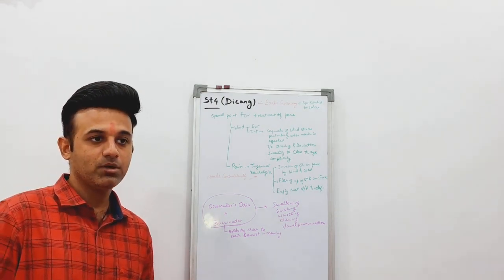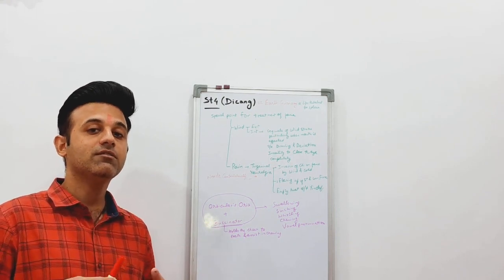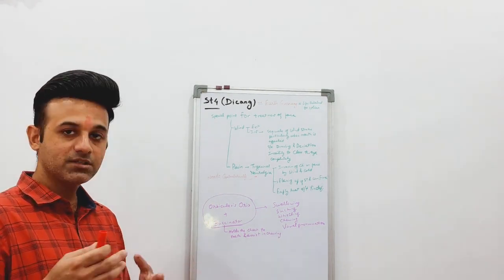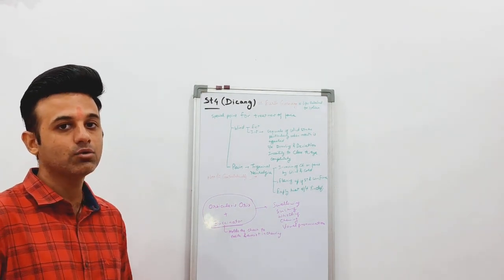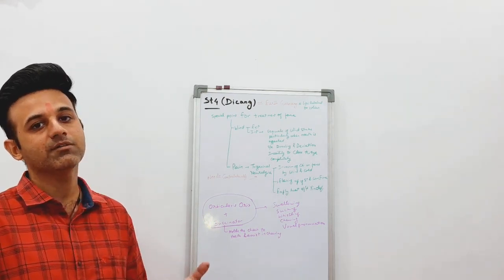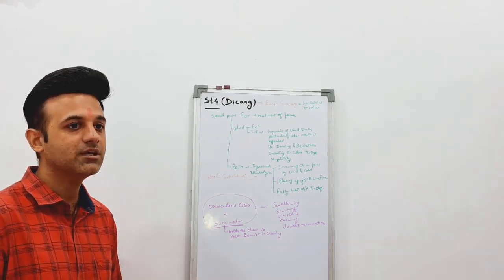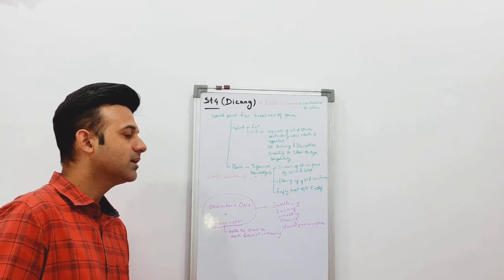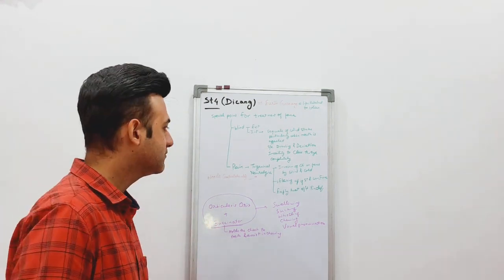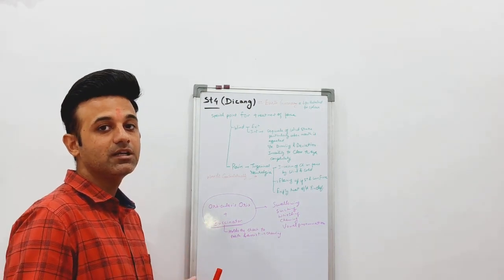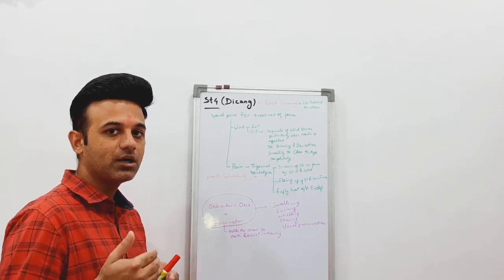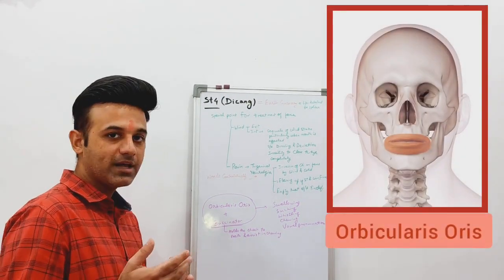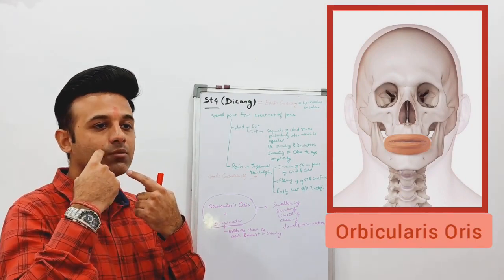The other indication is pain, especially in trigeminal neuralgia. The reason could be external invasion of wind and cold on the channels of the face, or internal reasons such as excess liver fire flaring up, or empty heat due to yin deficiency. Whatever the reason, this point plays a very important role in trigeminal neuralgia. In this case we needle contralaterally — to the opposite side.